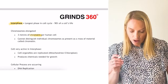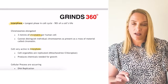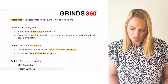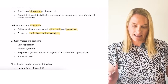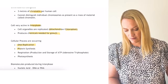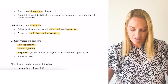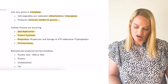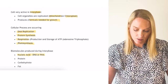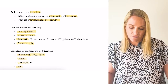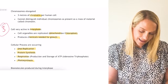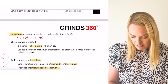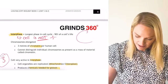During interphase, mitochondria and chloroplasts are produced. Cellular processes that take place include DNA replication, respiration, and in plants, photosynthesis. Biomolecules made during interphase include nucleic acids (DNA or RNA), proteins, carbohydrates, and fats. You need to know at least three things that take place during interphase. Remember: interphase is the longest part — the cell is not dividing, it is getting ready to divide.